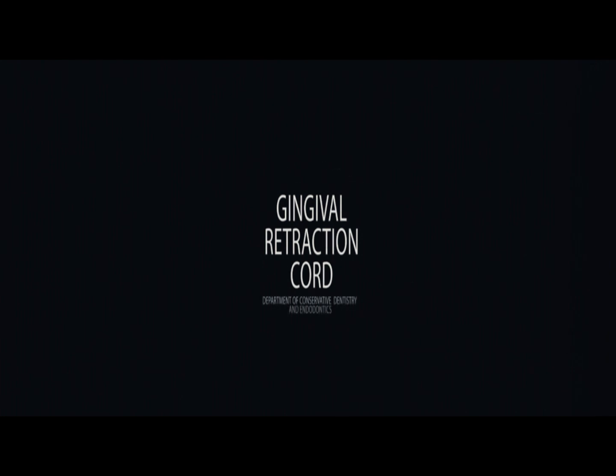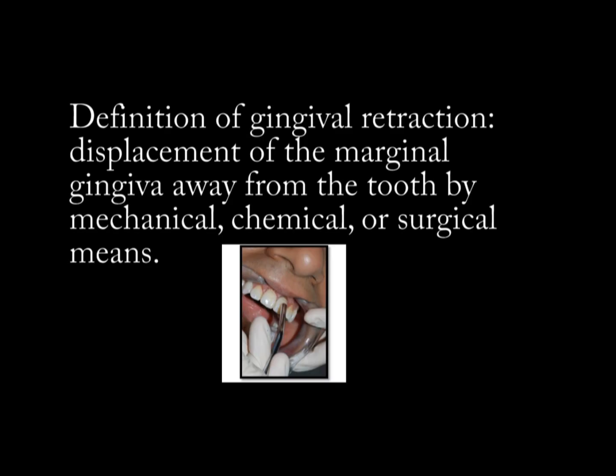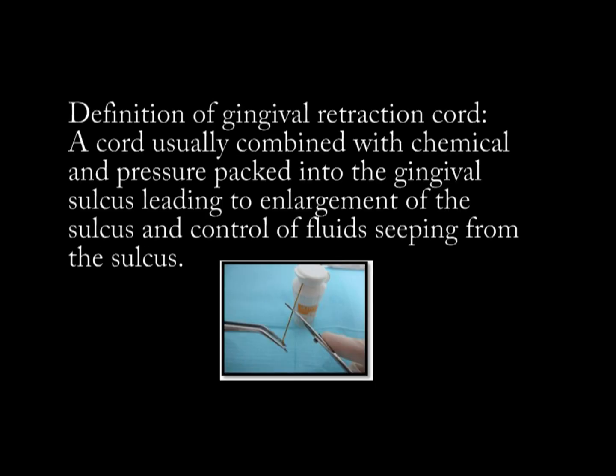Gingival retraction cord. Gingival retraction is the displacement of the marginal gingiva away from the tooth by mechanical, chemical, or surgical means. Gingival retraction cord is a cord usually combined with chemical and pressure, packed into the gingival sulcus, leading to enlargement of the sulcus and control of fluids seeping from the sulcus.